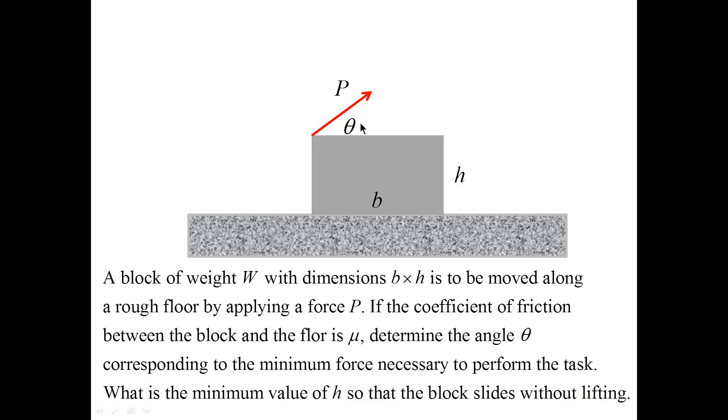Our task is to determine the optimal choice of theta. A natural choice would be theta equal to zero - we simply push the block. On the other hand, in this problem we will show that this is not an optimal choice, and an optimal choice is dependent on the coefficient of friction mu between the block and the floor.